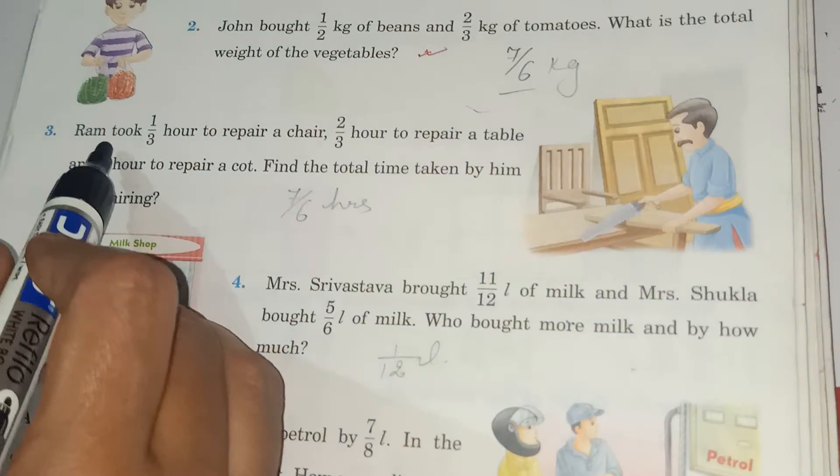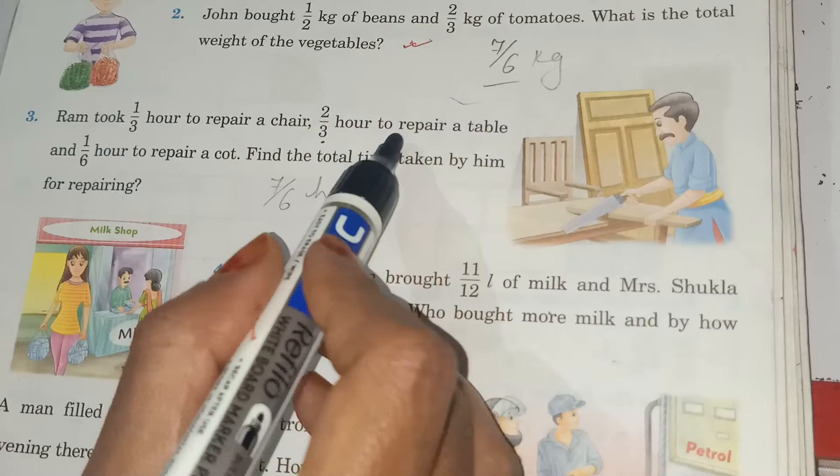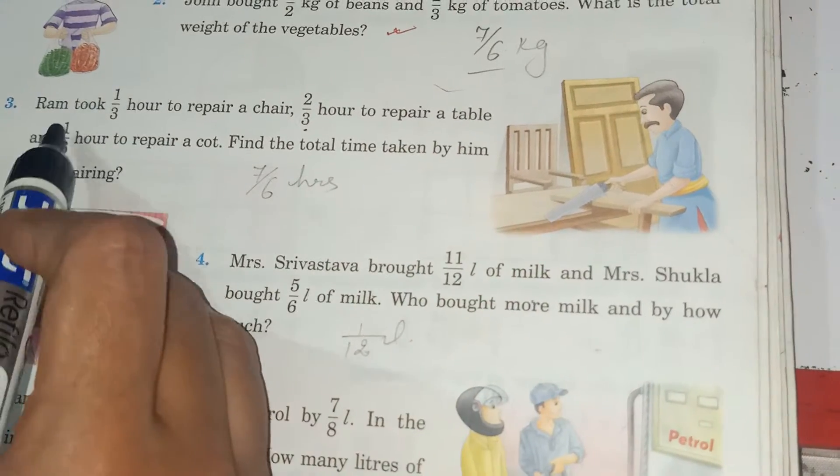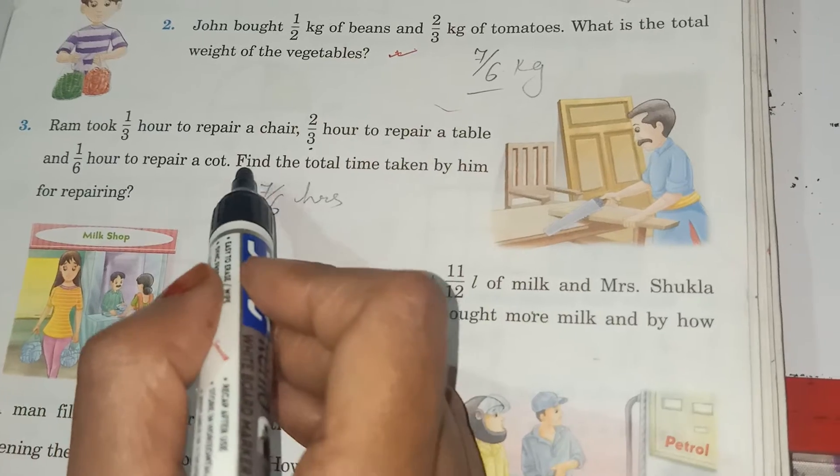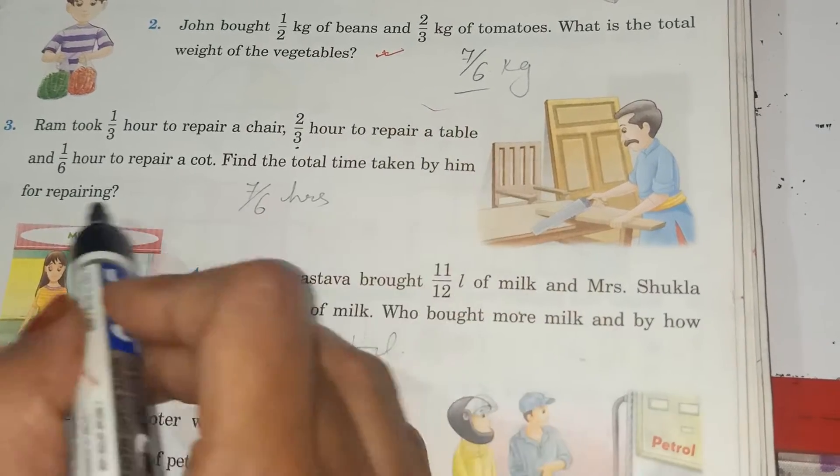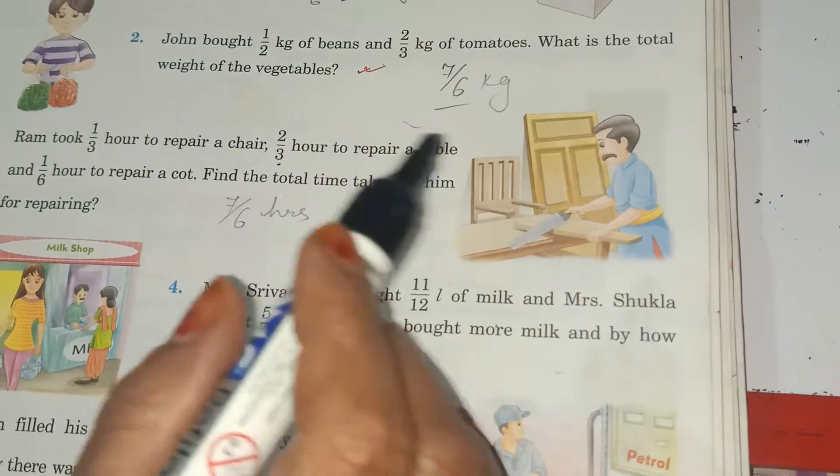Number 3, Ram took 1 by 3 hour to repair a chair, 2 by 3 hour to repair a table and 1 by 6 hour to repair a coat. Find the total time. So same. It is same like question number 1 and 2 addition.